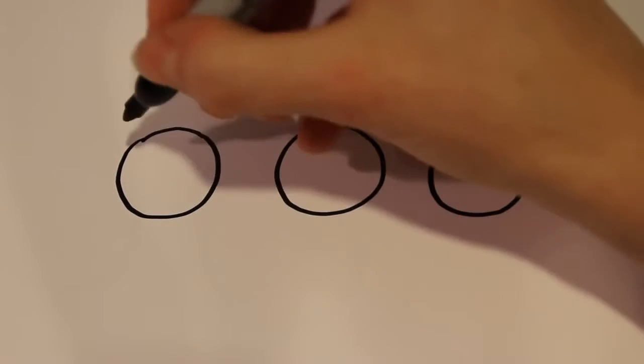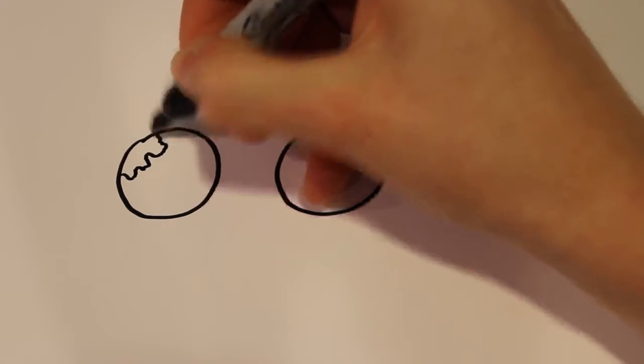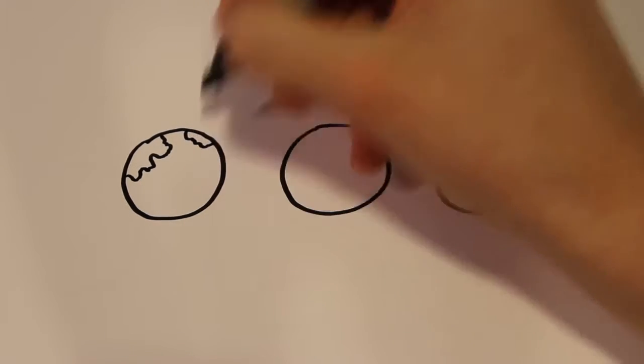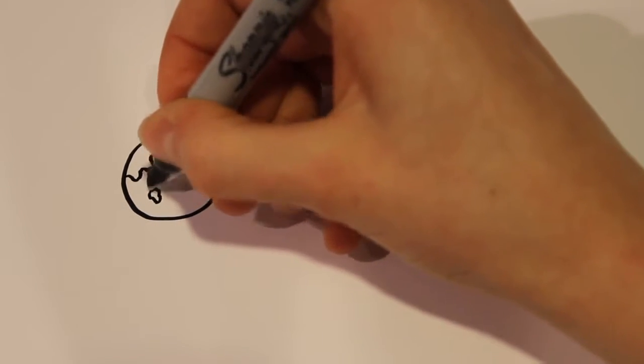And then after that, the first one I'm going to show you how to draw is Earth. So Earth has a lot of squiggly little pieces of land, so I'm just going to do that. And then you can just draw little different sized islands that are being cut off.